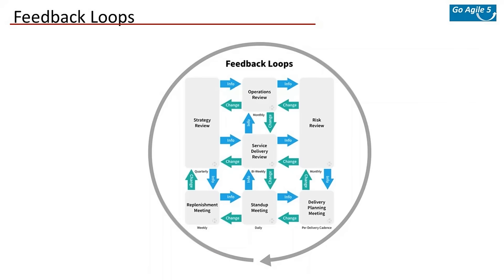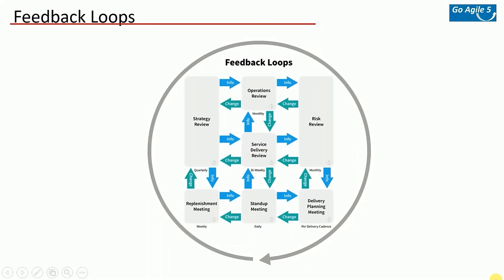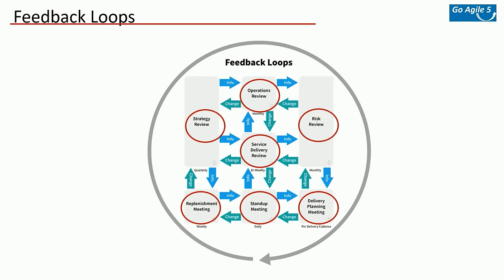Feedback loops are a vital part of Kanban. We use them to tell us if what we're doing is effective or making an impact. These feedback loops are done through a set of meetings with different cadences, focusing on how you're getting things done, how you can do it better, and whether you're doing the right things. Kanban uses seven different meetings for feedback loops.